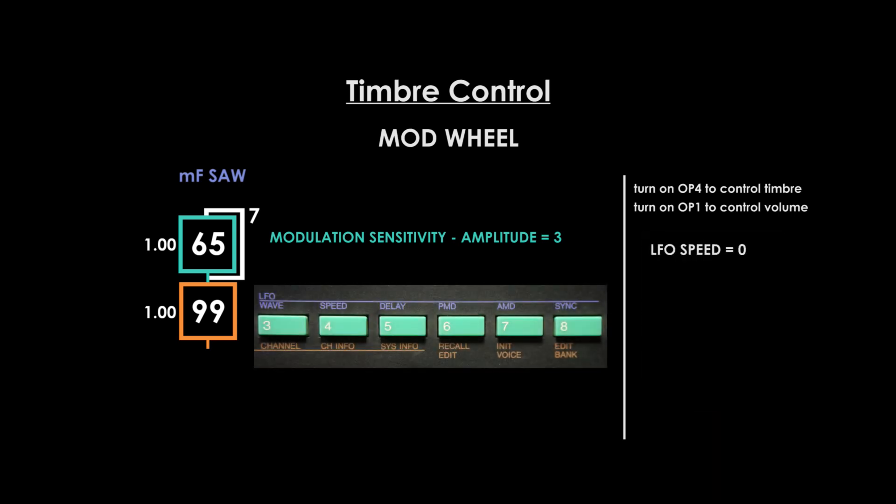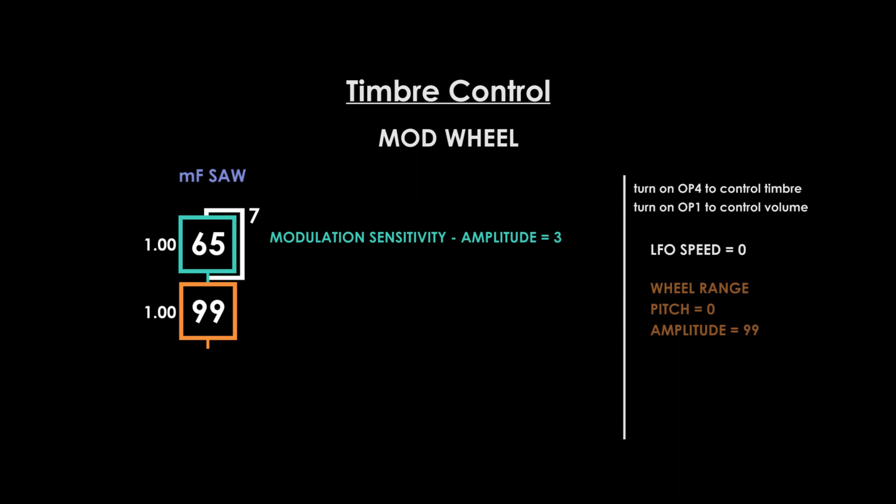By default the LFO is engaged to affect amplitude modulation, so lower the LFO speed to 0. Next press function and set wheel range. By default the wheel range for pitch is set at 50, so set this to 0 and increase the amplitude to 99. Now the mod wheel is active and you have real-time control of your selected modulator's output level.